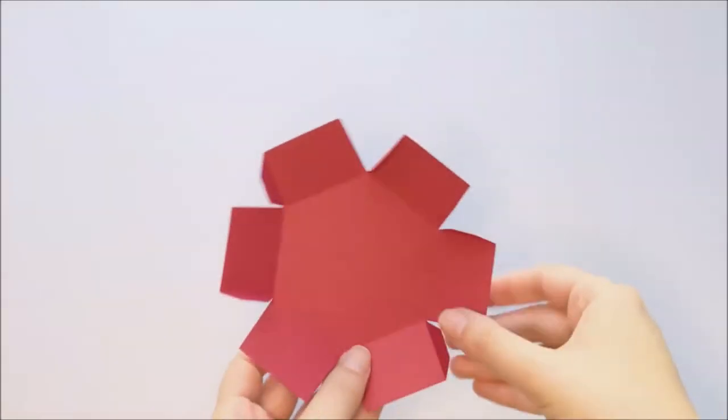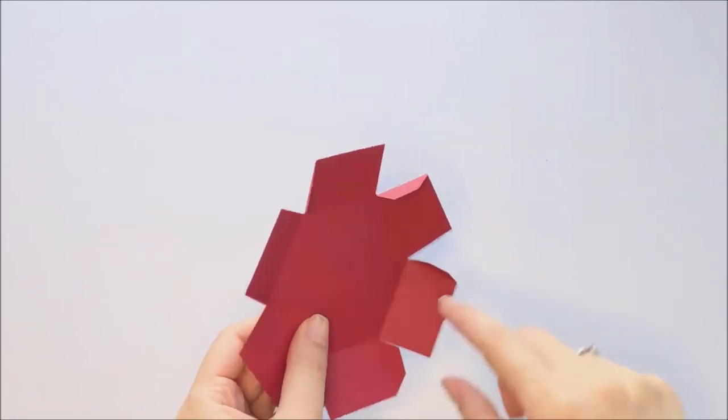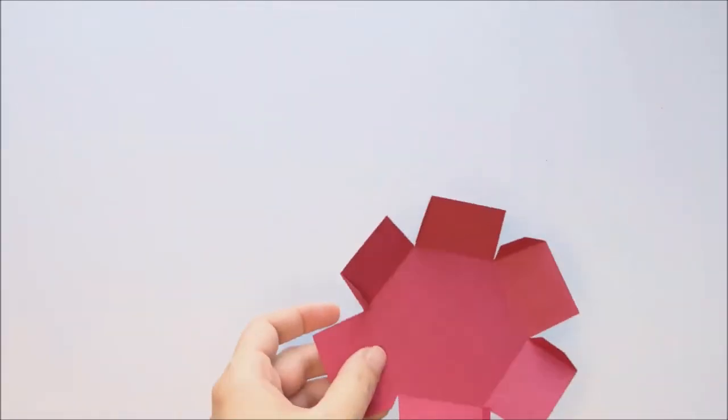Start by assembling the container first, which is this piece. You're going to place glue on each of these side flaps and then use that to glue it to the side next to it.